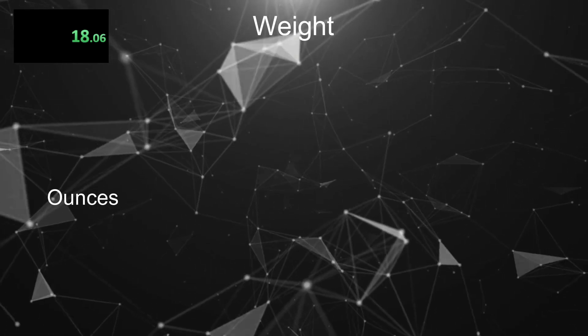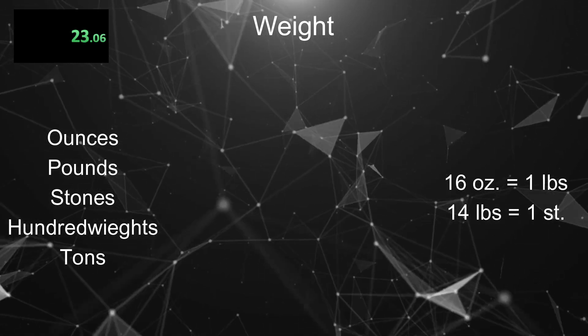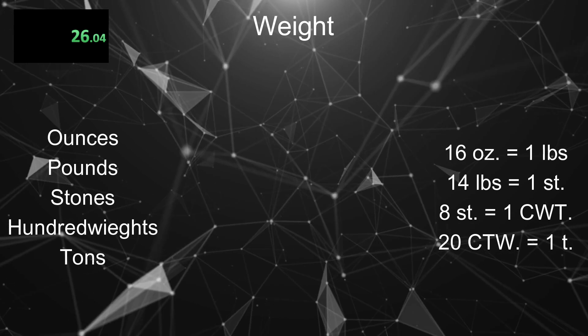For weight, we have ounces. Wait, ounces again? Yes. Ounces, pounds, stones, hundredweights, and tons. There are 16 ounces a pound, 14 pounds of stone, 8 stones in a hundredweight, and 20 hundredweights in a ton.